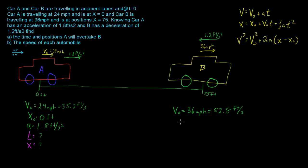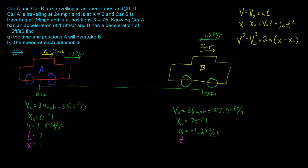Car B has an initial position x₀ of 75 feet, and a deceleration — so opposing our positive direction of motion — of minus 1.2 feet per second squared. The minus sign is because a deceleration opposes our defined positive direction. Again, we are solving for the time and the final position.